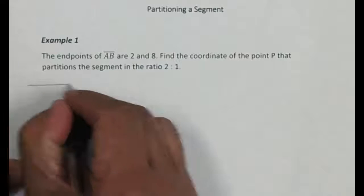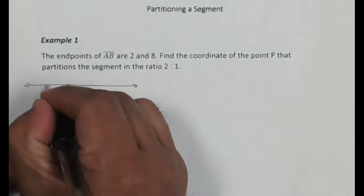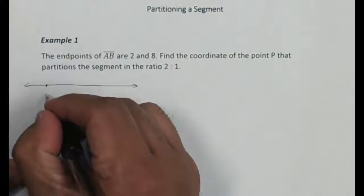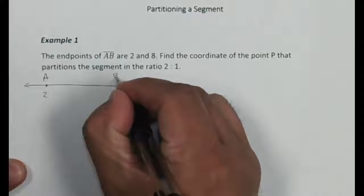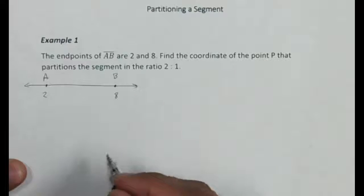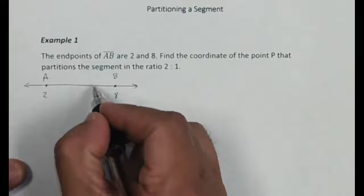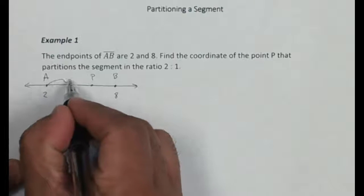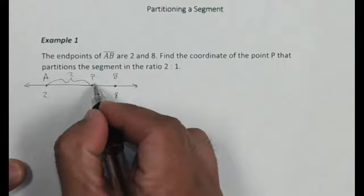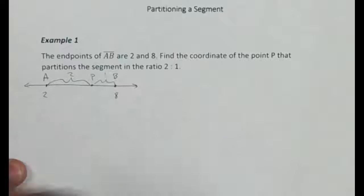So basically, you'll have a number line, and you'll have some points on the number line. So this one is at 2, that's our point A, and you'll have a point B, and that one's at 8. And you want to find some point P, so that the distance from here to here is twice as long as the distance from P to B.